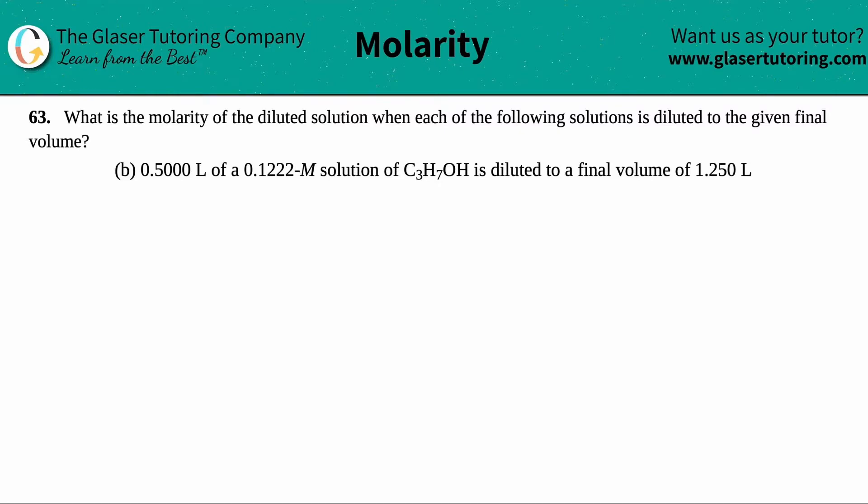Number 63: What is the molarity of the diluted solution when each of the following solutions is diluted to the given final volume? In this case, we have letter B. We have 0.5000 liters of a 0.1222 molar solution of C3H7OH, that's propanol, and this is diluted to a final volume of 1.250 liters.